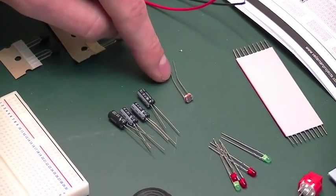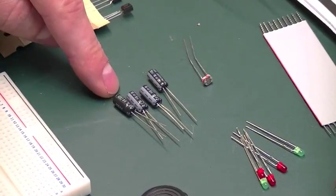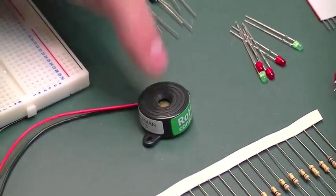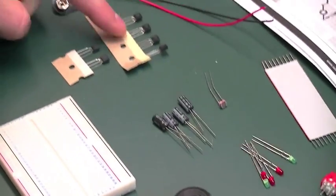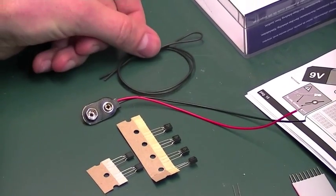We have a light-dependent resistor. We have some electrolytic capacitors. We have a small sounder that makes a noise. We have two kinds of transistors. A battery holder and some wire.